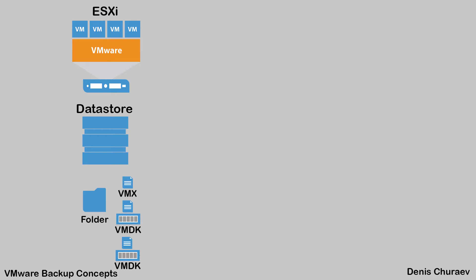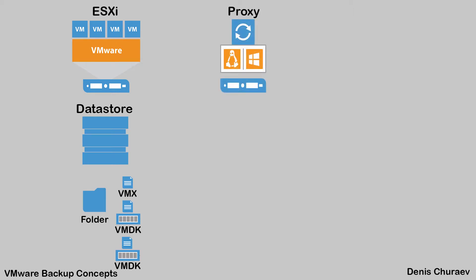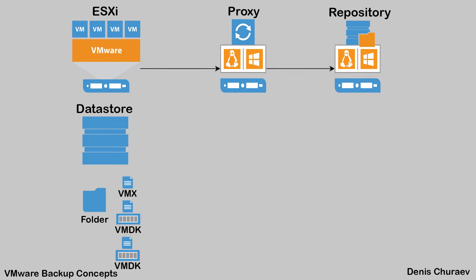What we are going to backup is this folder with the files where the machine is stored. The most important files are the VMX, which contains configuration, and VMDK, which are the disks. In order to backup the machine, we must read the data — that role is performed by a server, either Windows or Linux, called the backup proxy. We also need to store backups somewhere, and that role is performed by a server, also Linux or Windows, called the repository. By default the Veeam backup server itself fulfills both roles, but if you want to size the environment you'll want multiple proxies and possibly multiple repositories, especially to store backups in different locations to avoid data loss.